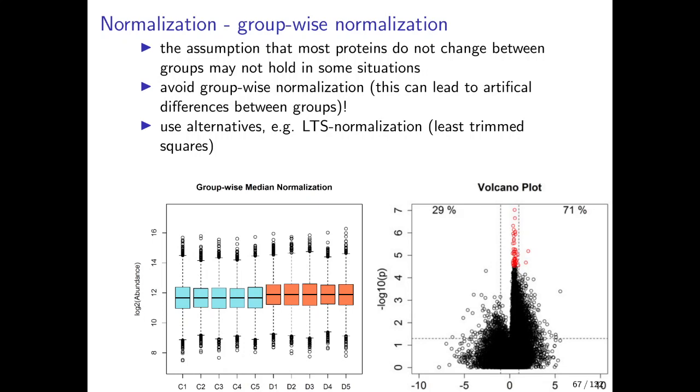This is because we have done this groupwise normalization. So please avoid groupwise normalization and use alternative methods. For example, the LTS method. This normalization can cope with changes between the two groups of up to 50% of the proteome. So it's really adapted to larger changes between the two groups.